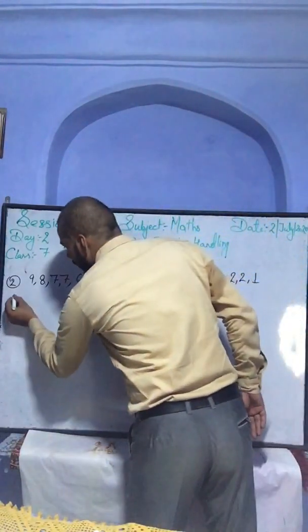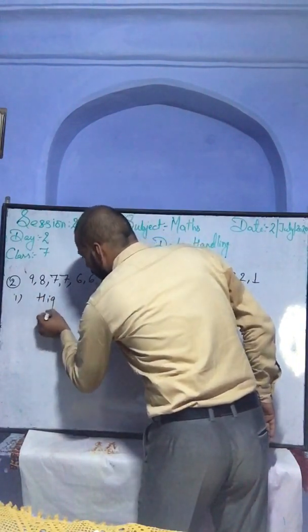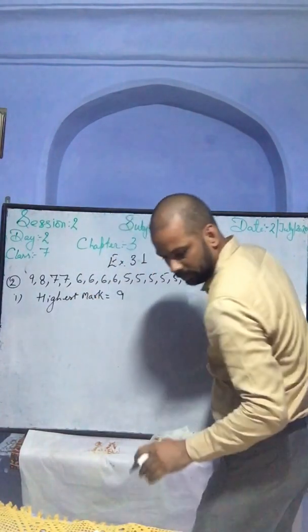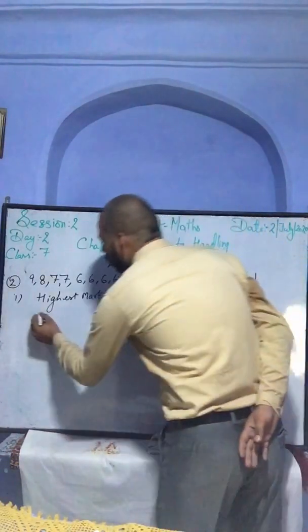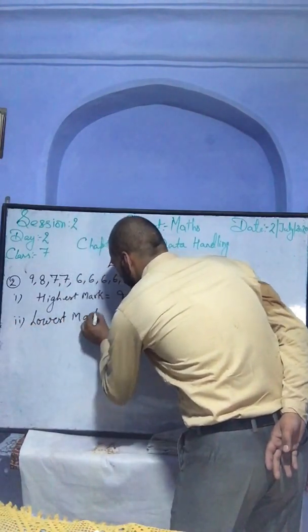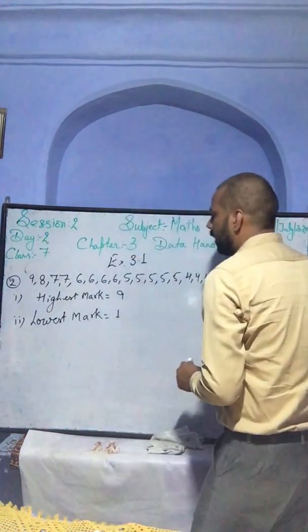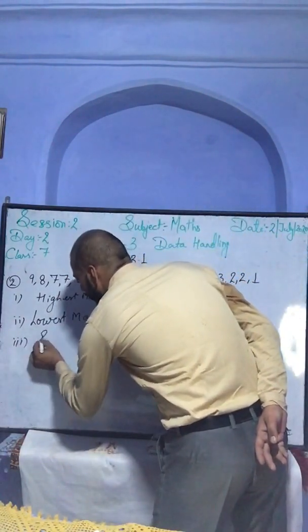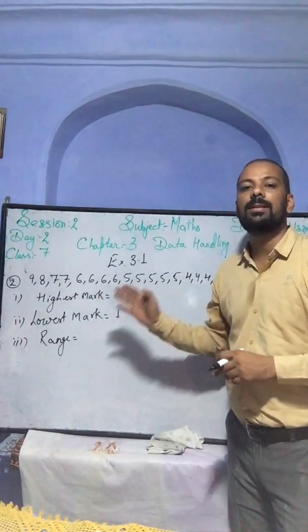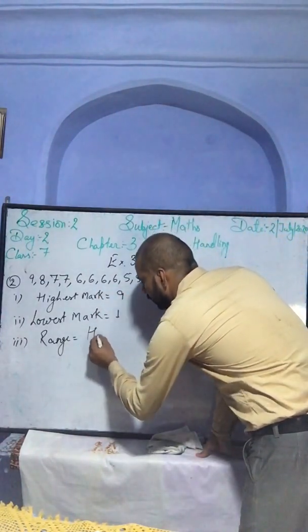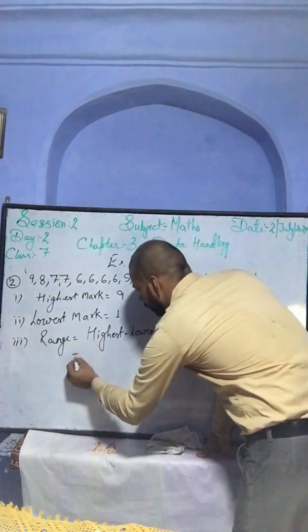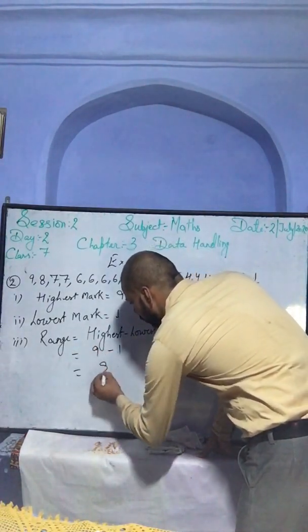Now, the highest mark is 9. Which number is the lowest? The lowest mark is 1. The range — he is asking for the range. The range, as we learned, is highest minus lowest: 9 minus 1. The range of the marks is 8.